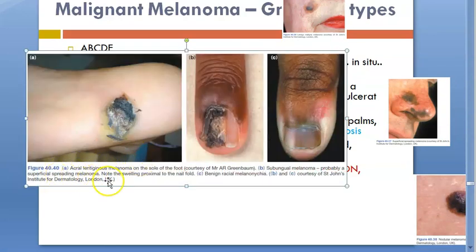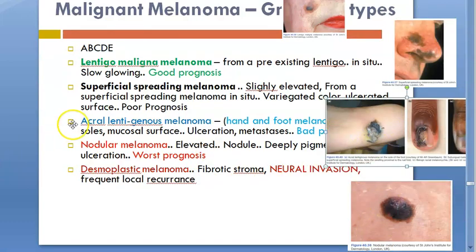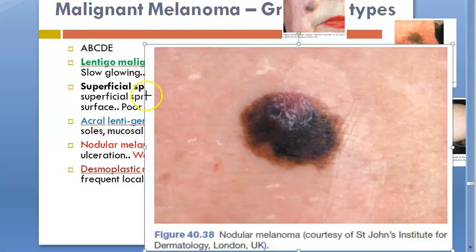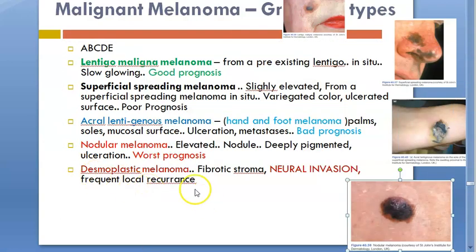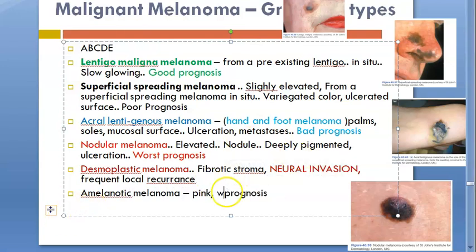Acral lentiginous melanoma of the sole of the foot — you can see this pigmentation on the skin and even the nail. Then you have nodular melanoma, which has the worst prognosis. Then there is desmoplastic melanoma, which will have neural inflammation. Then there is amelanotic melanoma — this would be pink and also has worst prognosis, even worse than nodular melanoma.